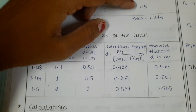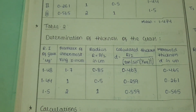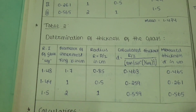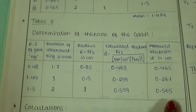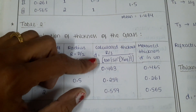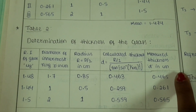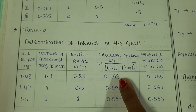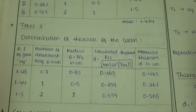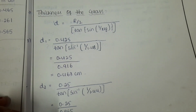After determining the refractive index, use the refractive index values to calculate the thickness. The calculated thickness must also be near to the measured values. In the second tabular column, record refractive index, diameter, and radius, then apply the thickness formula to calculate thickness for each glass and compare the calculated thickness with the measured thickness — they must be close.